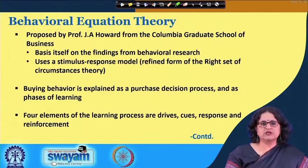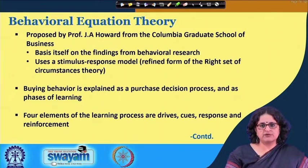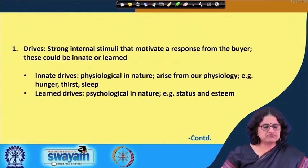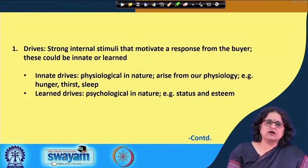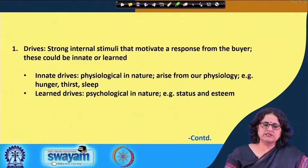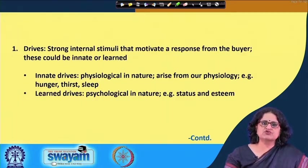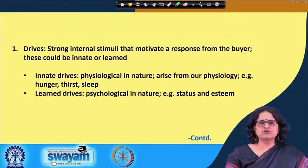The theory bases itself on four elements of the learning process: drives, cues, response, and reinforcement. The behavioral equation theory is explained as a purchase decision process and as phases of learning incorporating these four different elements. Let us now talk about what each of these elements means, beginning with drives.